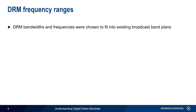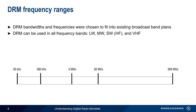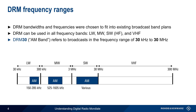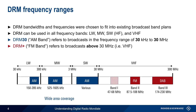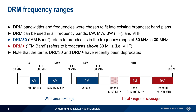The bandwidths and frequencies used by DRM were chosen to fit into the existing broadcast bands, including long and medium wave, shortwave or HF, and VHF. Broadcasts in the frequency ranges below 30 MHz are sometimes called DRM-30 or AM band broadcasts, and are intended to provide wider area coverage, particularly the HF or shortwave band. Broadcasts at VHF are sometimes called DRM-plus or FM band broadcasts, and are for local or regional coverage. Although the designations DRM-30 and DRM-plus are widely used, it's worth noting that these terms have recently been deprecated by the DRM consortium.